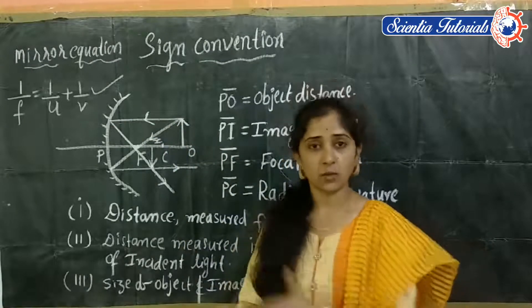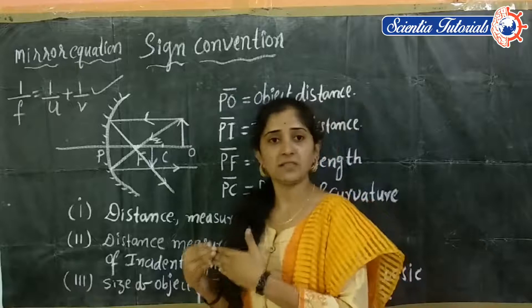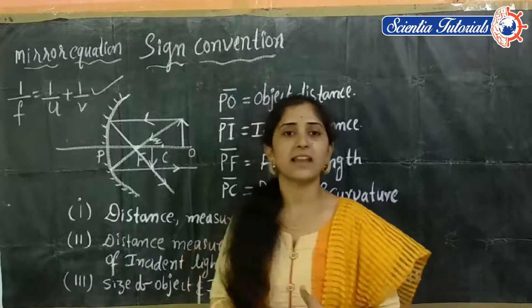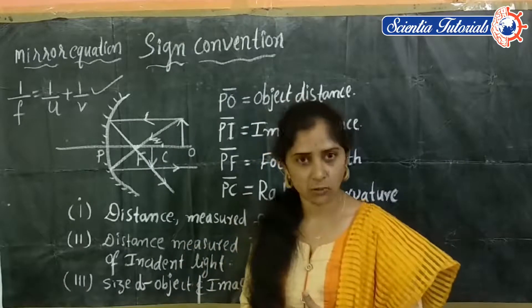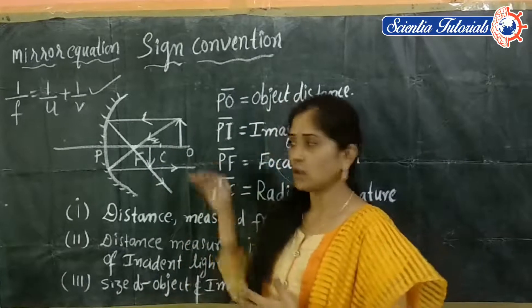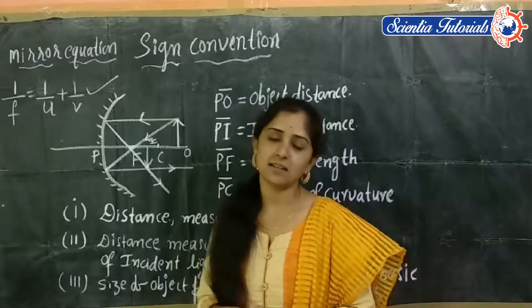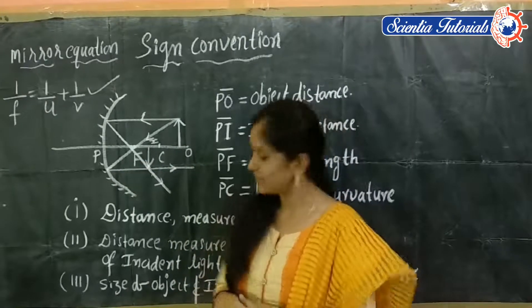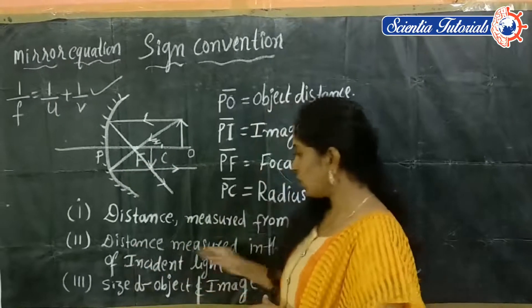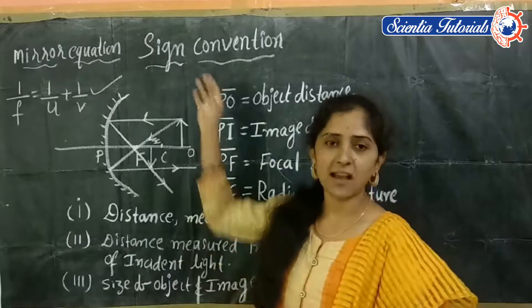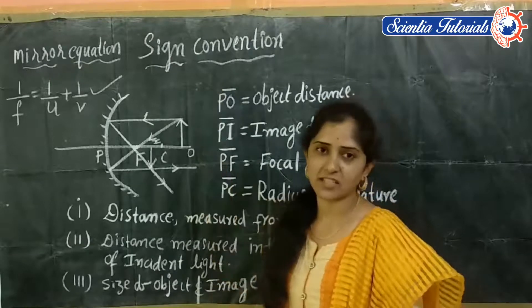According to the direction of incident light: distances measured opposite to the direction of incident light are taken as negative, and distances measured in the direction of incident light are taken as positive. This is the second rule under the sign convention.